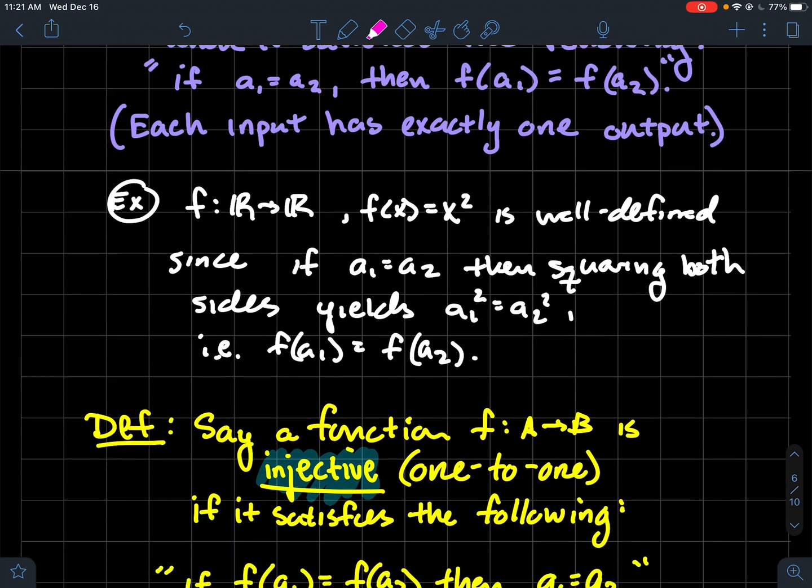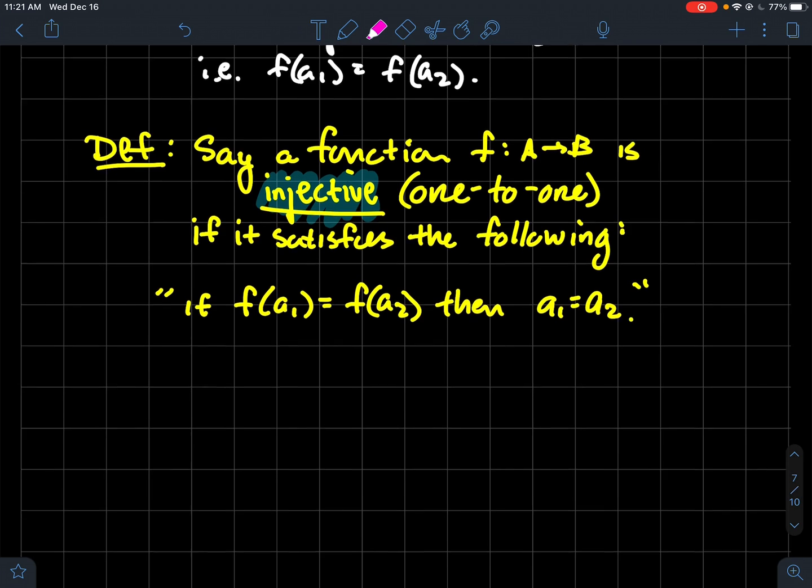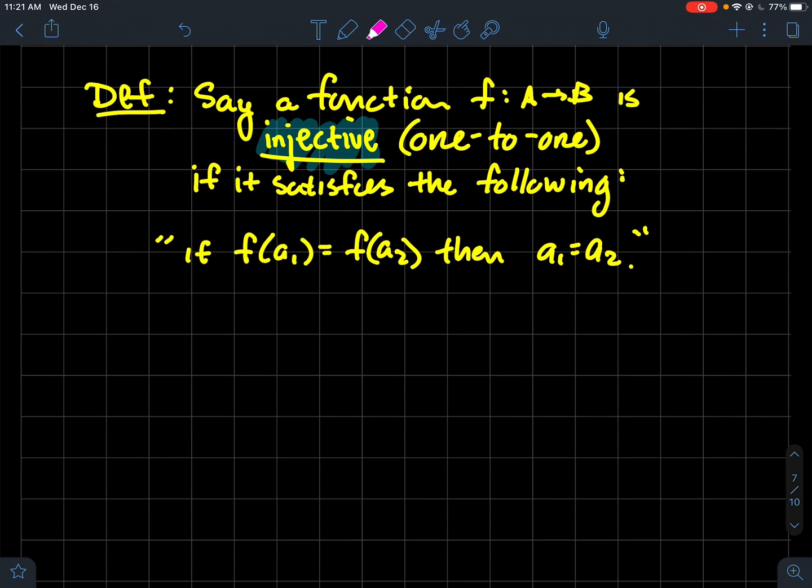Moving along. We're going to say a function from A to B is injective. Another word for that, or maybe phrase for that, is one-to-one if it satisfies the following. And so here what we're going to assume, assume that f of a1 equals f of a2. In other words, you're dealing with the same output. It better be the case that the inputs were the same. So then a1 equals a2.